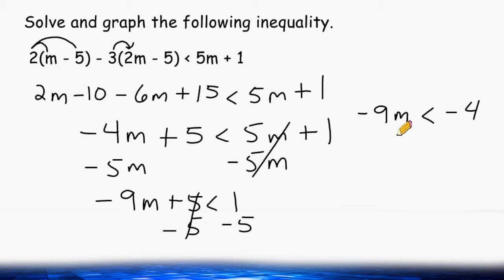Now the next thing that we have to do is isolate for the m variable by dividing negative 9 by itself. Because negative 9 and m are being multiplied, we just divide negative 9 by itself. Our goal is to get positive 1m at the end so we can read that as the solution. But we have to be careful: whenever you divide by a negative, you have to reverse the direction of your inequality symbol.